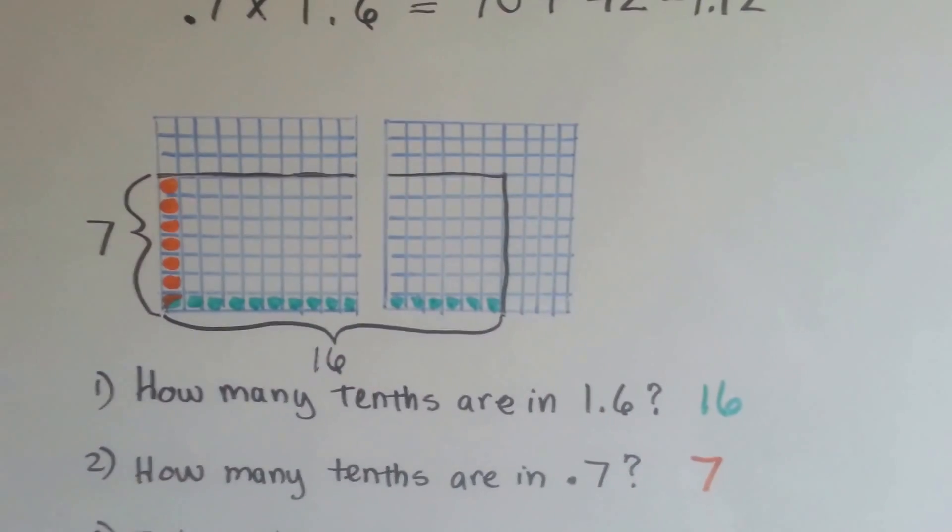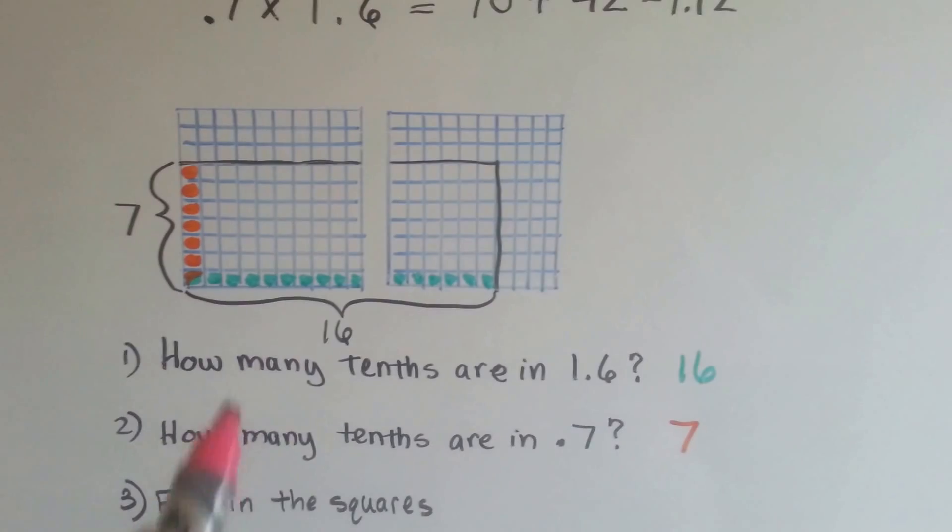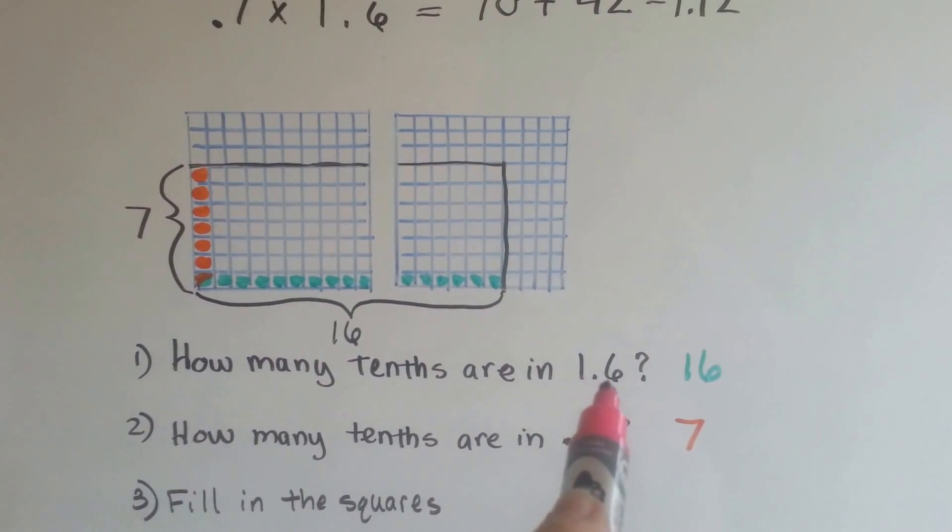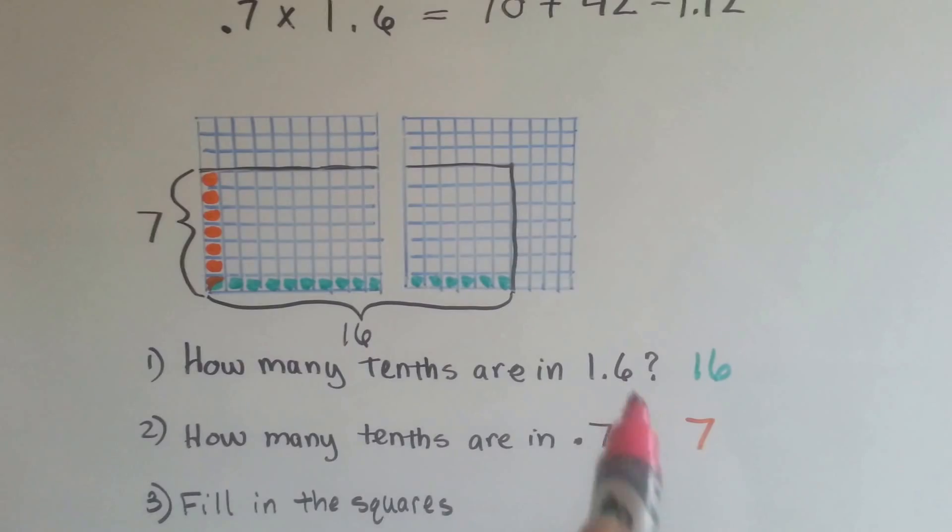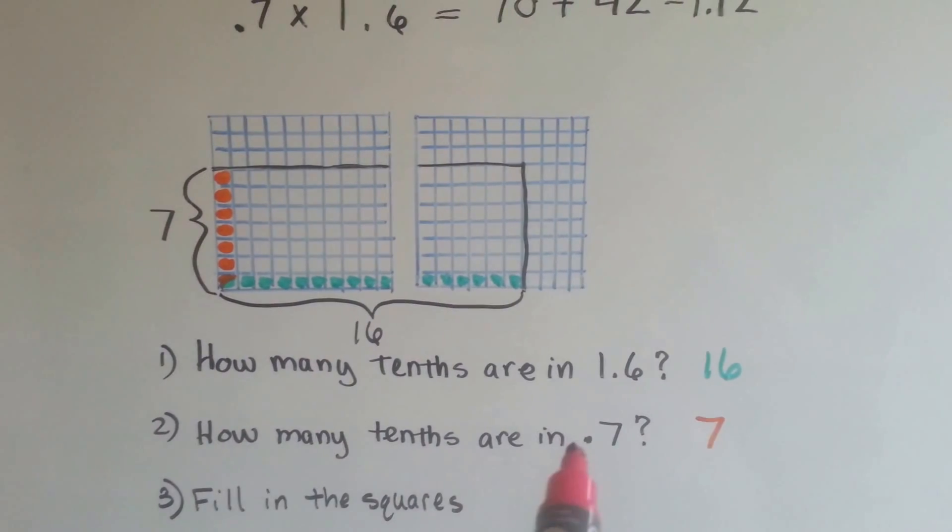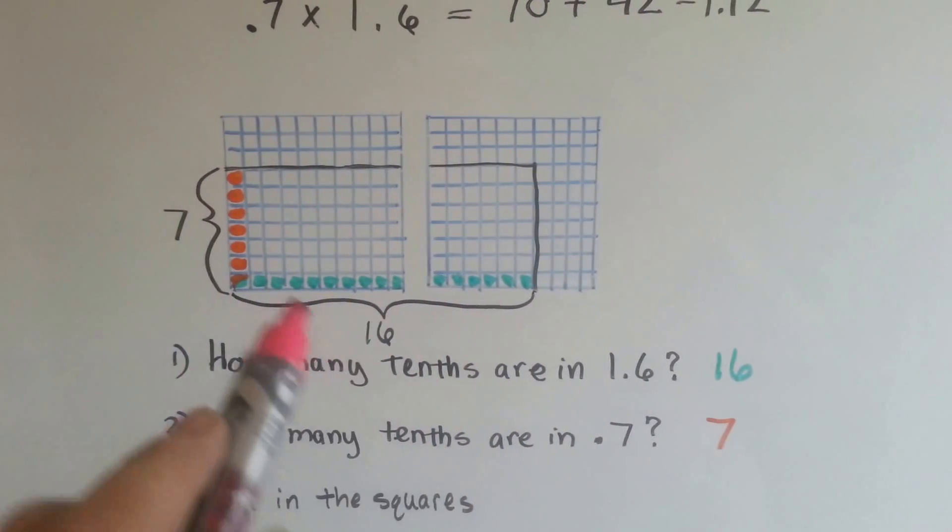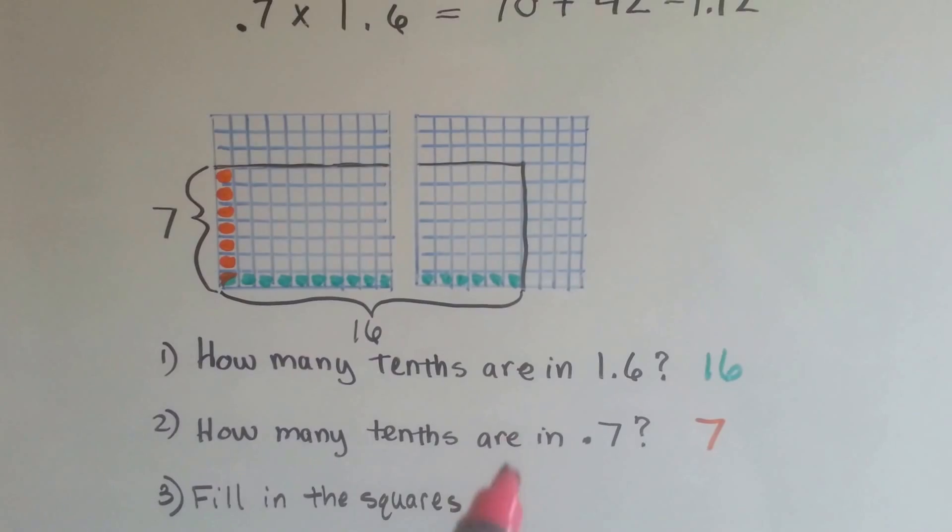From these two big blocks of 100. So how many tenths are there in 1 and 6 tenths? There's 16 of them. There's 10 here and 6 more. That makes 16. How many tenths are in 7 tenths? 7. So we're pretty much doing 7 times 16.